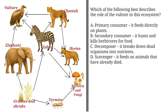Let's go through each possible answer one by one. A: Primary consumer — it feeds directly on plants. This is incorrect. According to the diagram, the vulture feeds on animals and not plants.